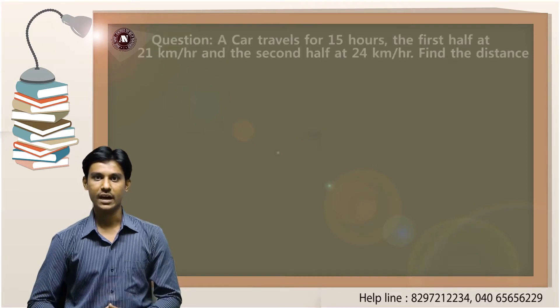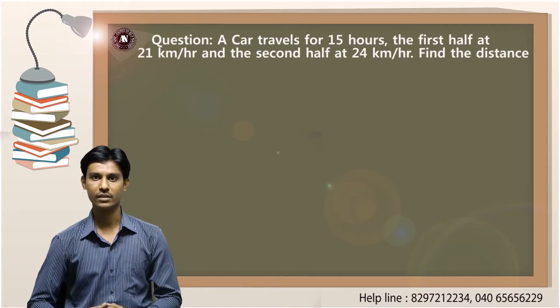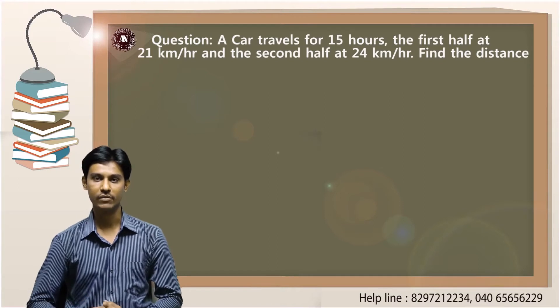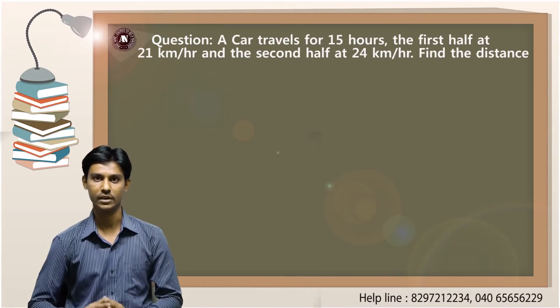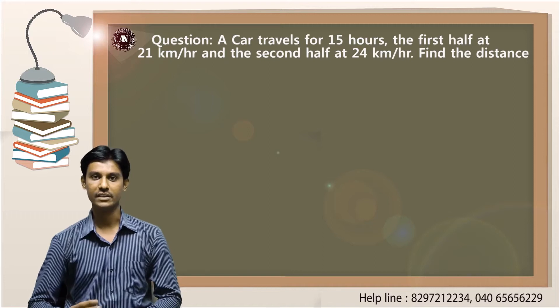This is the question. A car travels for 15 hours, the first half at 21 kilometers per hour and the second half at 24 kilometers per hour. Find the distance.